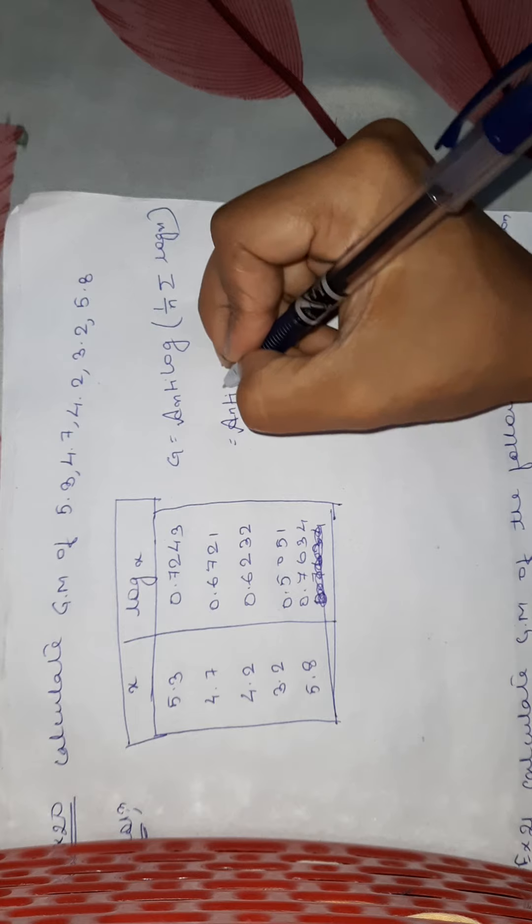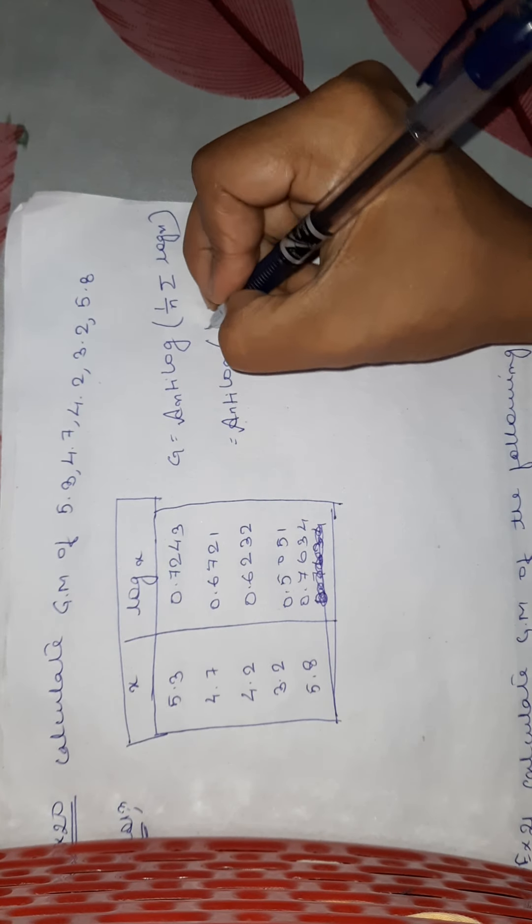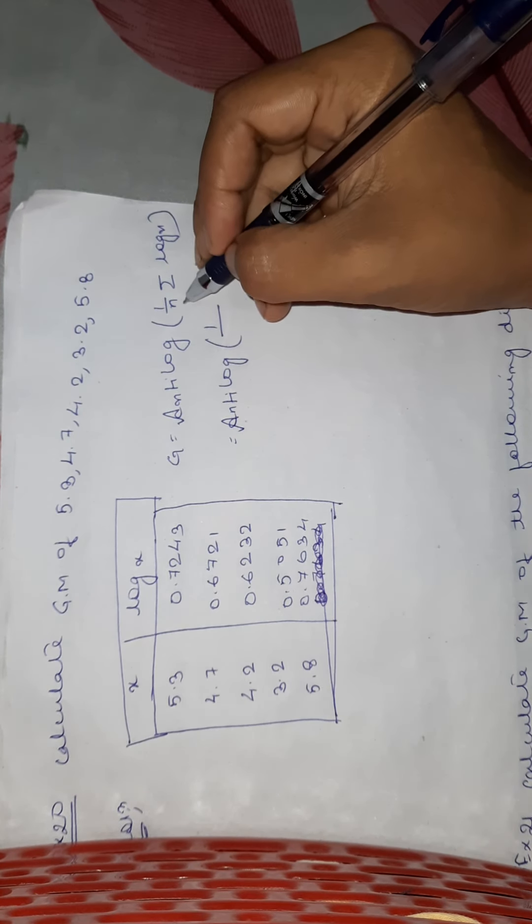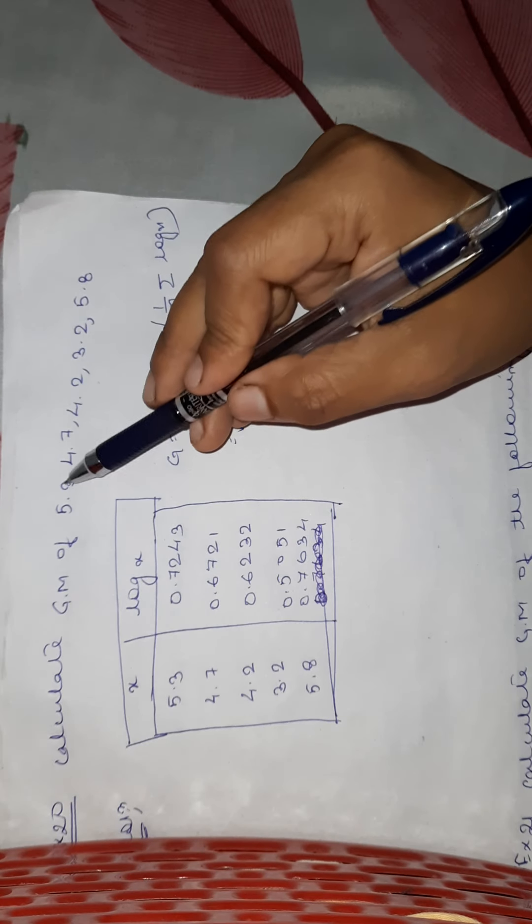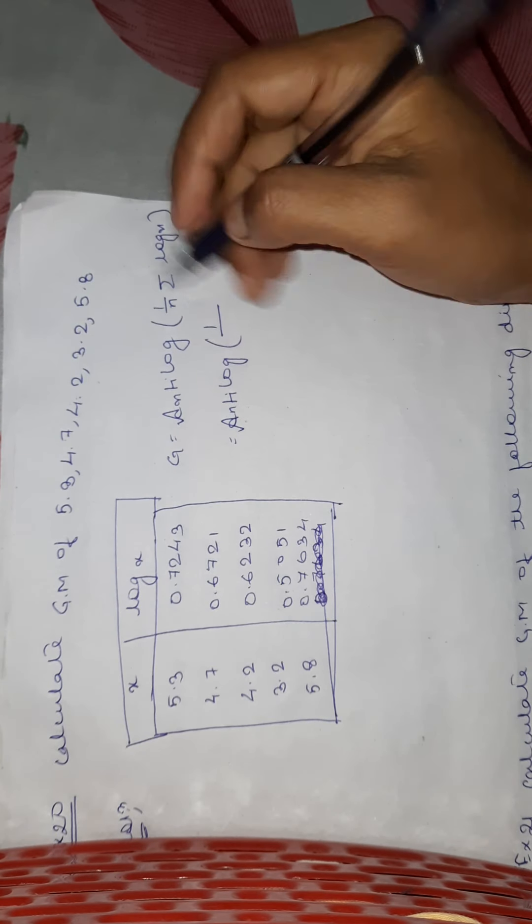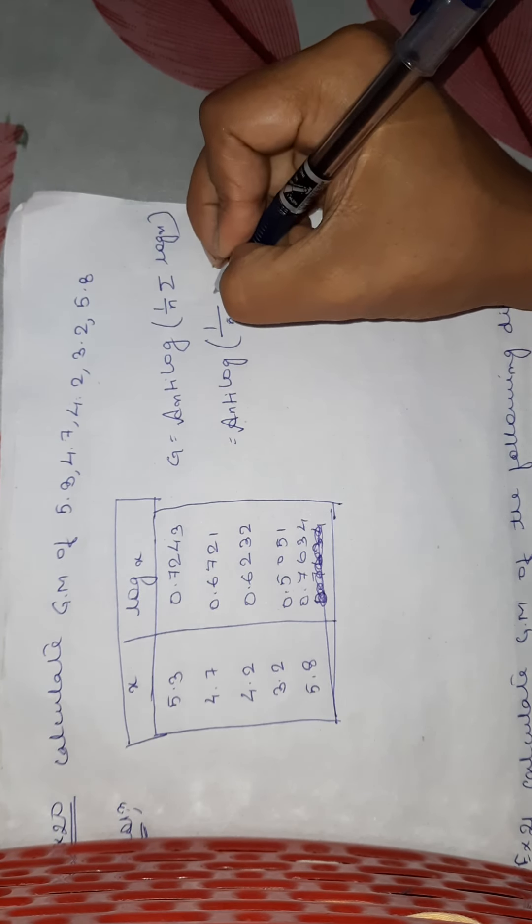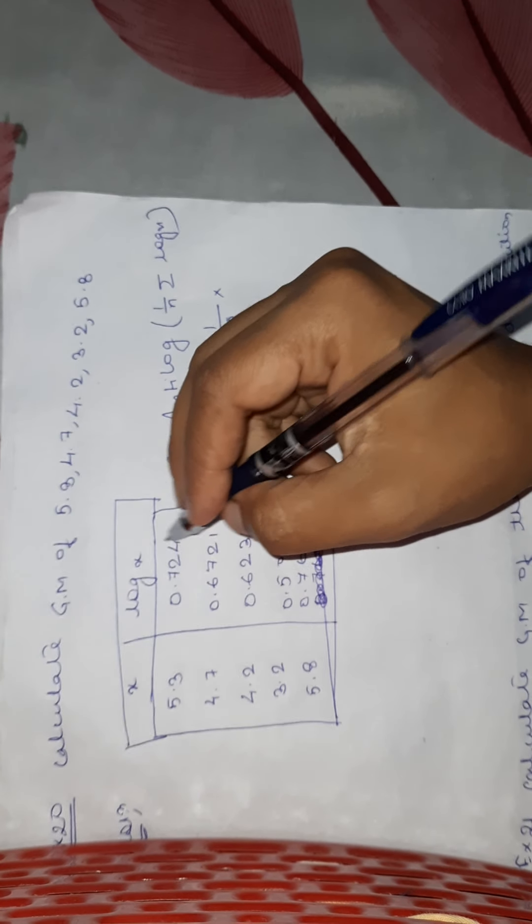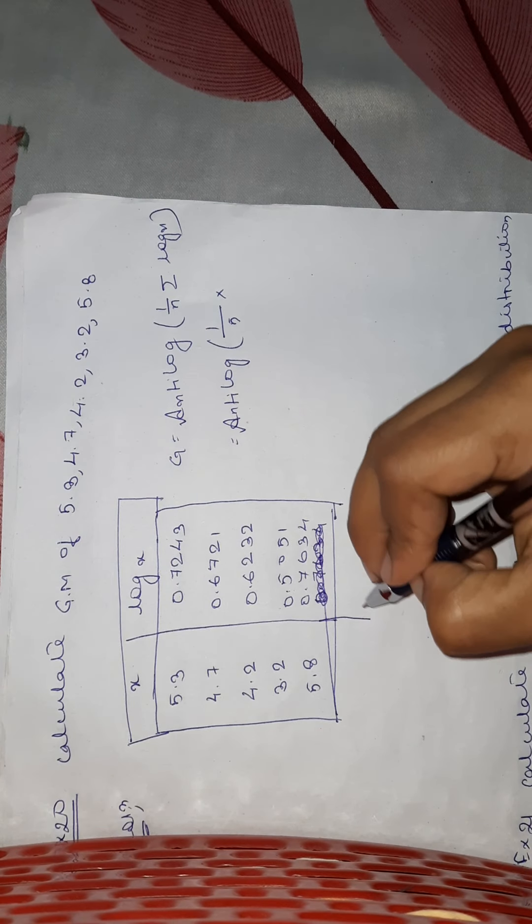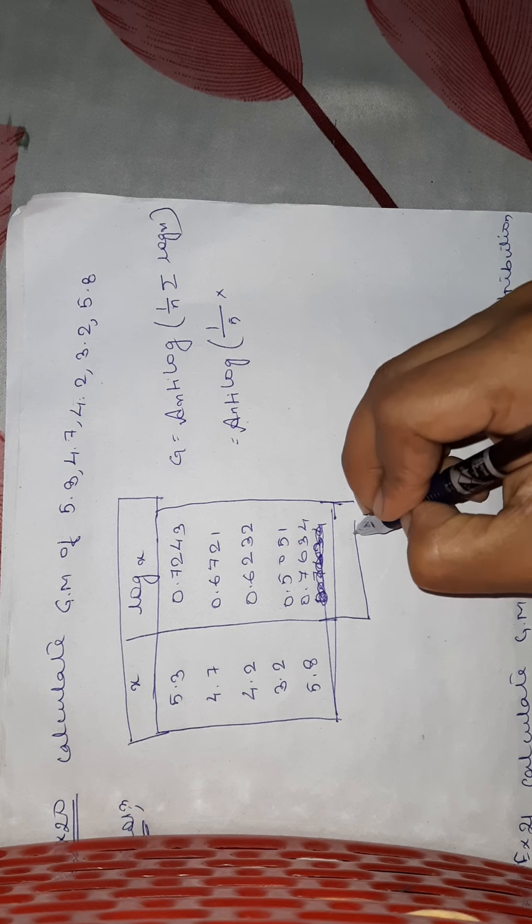So antilog, 1 by n, n means number of values, 1, 2, 3, 4, 5, and summation log x. It means this total of log x.